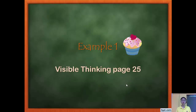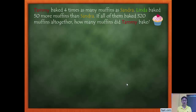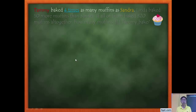Let's move on to Example 1 from Visible Thinking page 25. Pause to read the question first, then I'll carry on to explain the solution. What do we know? We have three people: Tammy, Sandra, and Linda. Tammy baked four times as many muffins as Sandra. Linda baked 50 more than Sandra. All of them baked 320 muffins altogether. We want to find out how many muffins Tammy baked.